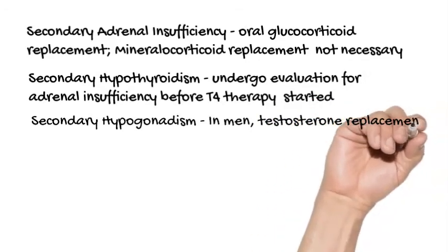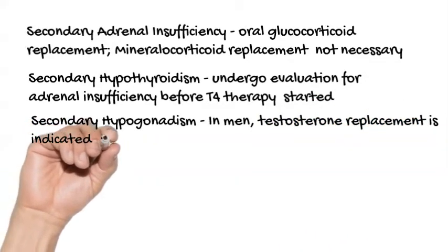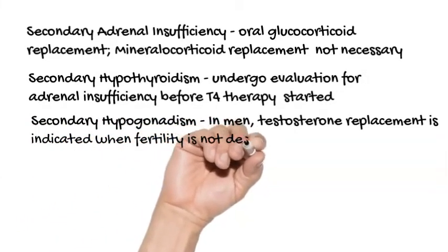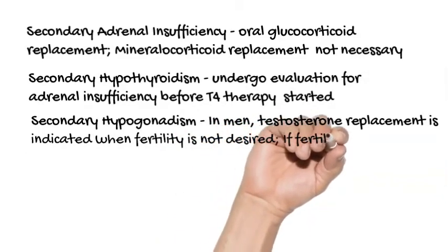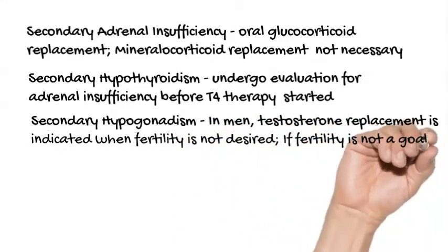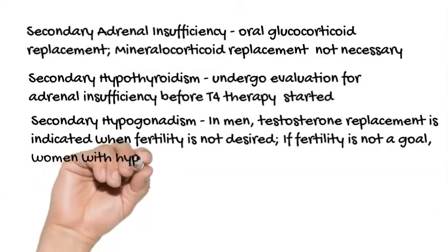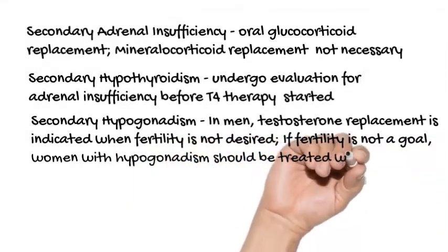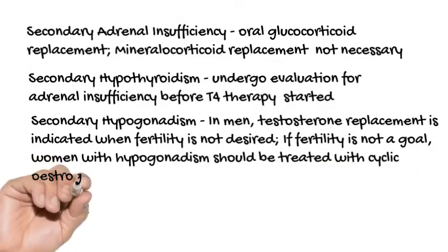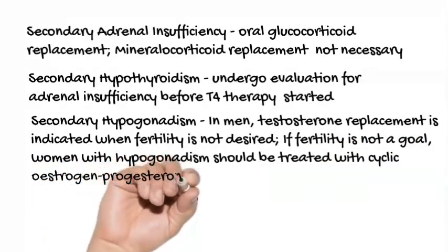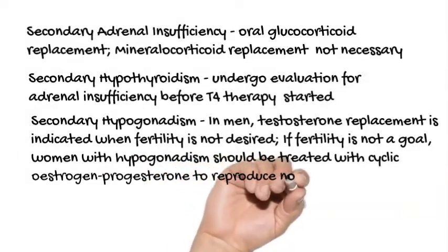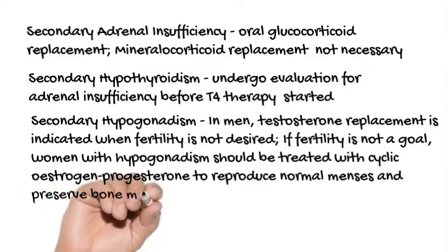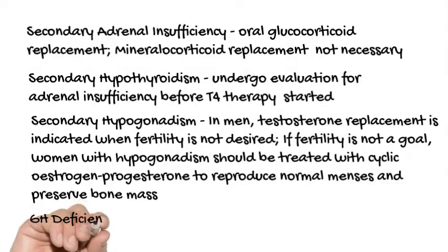Secondary hypogonadism. In men with gonadotropin deficiency, testosterone replacement is indicated when fertility is not desired. Men who wish to become fertile may be treated with gonadotropins if they have pituitary disease, or with either gonadotropins or gonadotropin-releasing hormone if they have hypothalamic GnRH deficiency. If fertility is not a goal, women with hypogonadism should be treated with cyclic estrogen-progesterone to reproduce normal menses and preserve bone mass. Gonadotropin or pulsatile GnRH therapy may be used when ovulation induction and fertility are the goal.